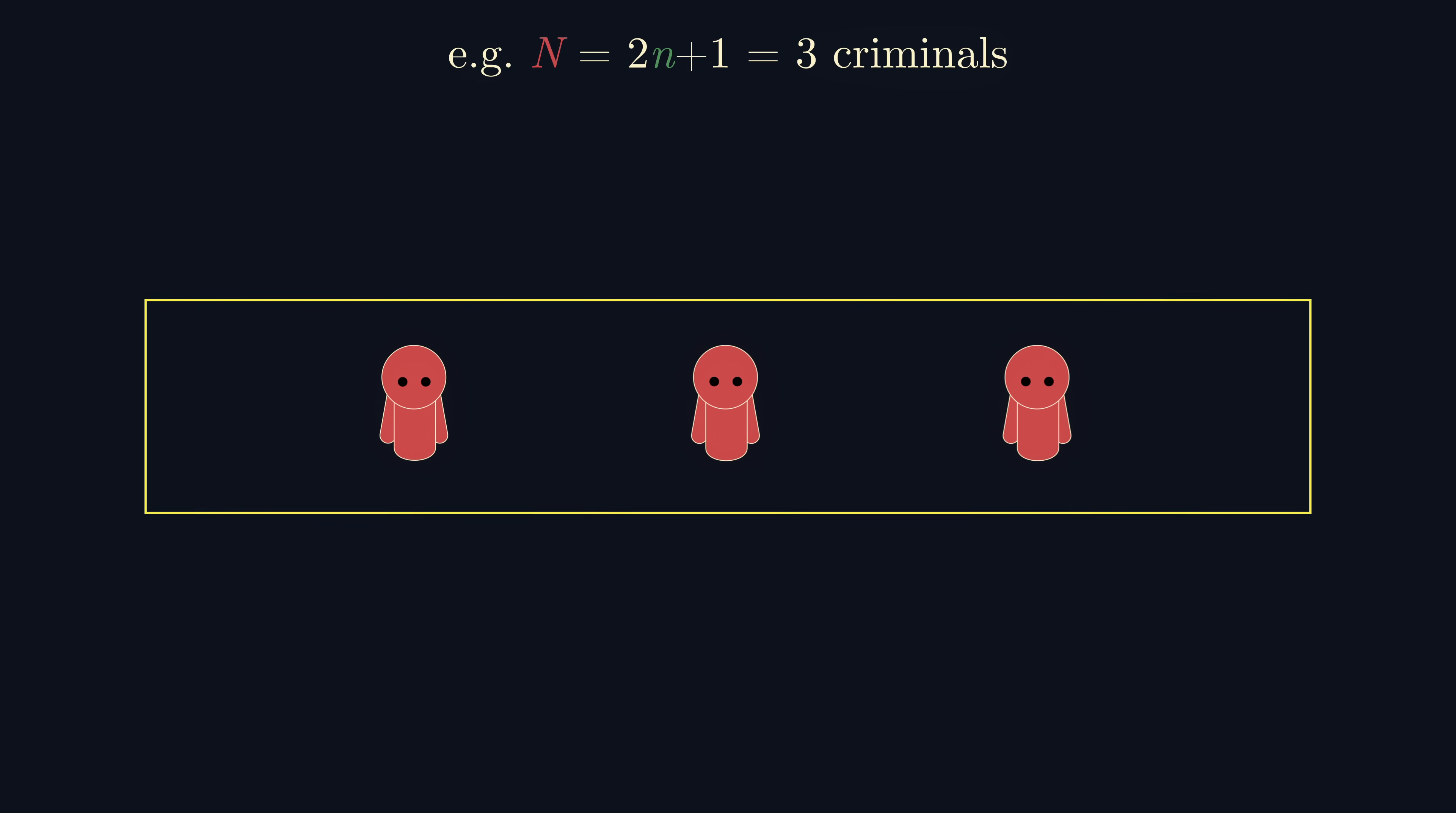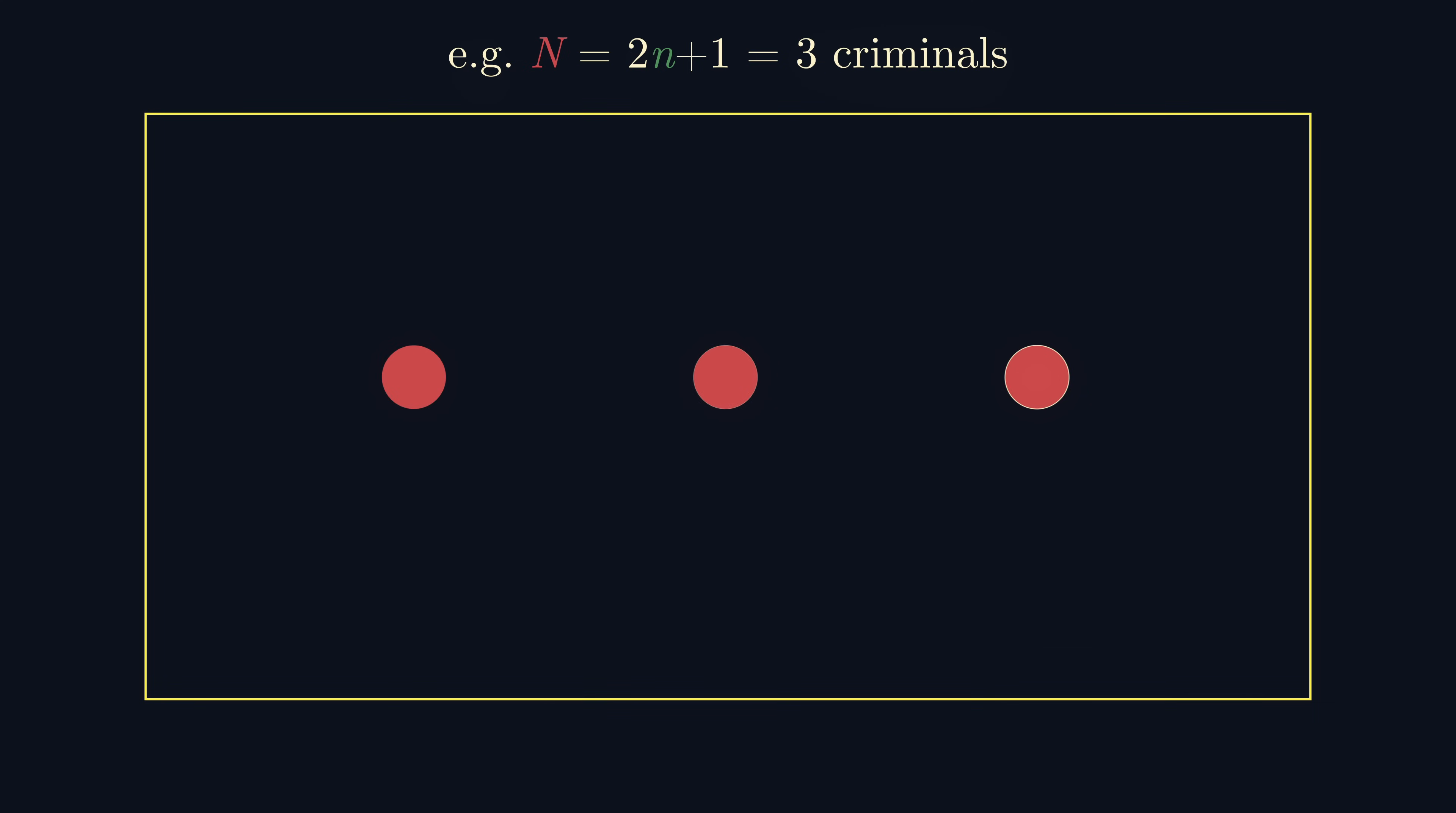But before that, we need a better way to represent this problem. Observe that we can represent the criminals with dots, which are referred to as vertices or nodes, and if a criminal is watched by another criminal, then I will place an edge between these two. In particular, a directed edge. Together these form a directed graph, and if we have n criminals, then we must have n vertices and n edges.